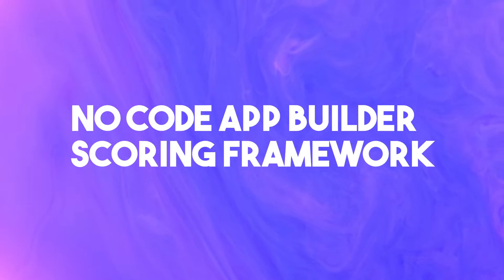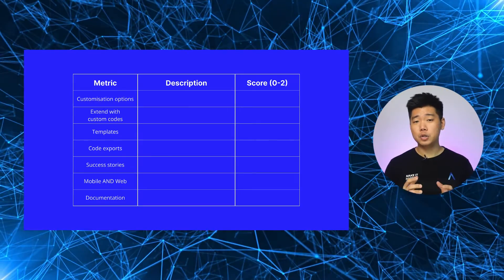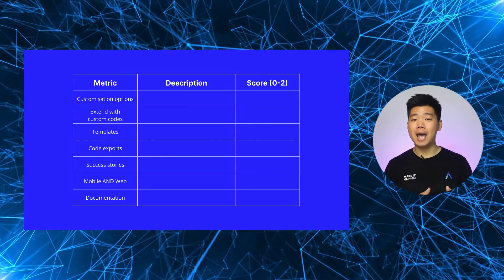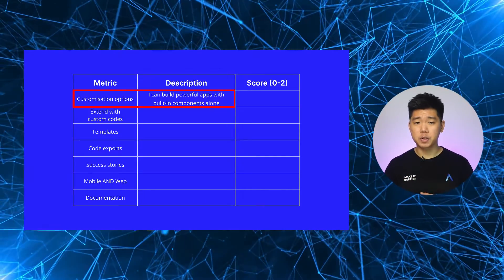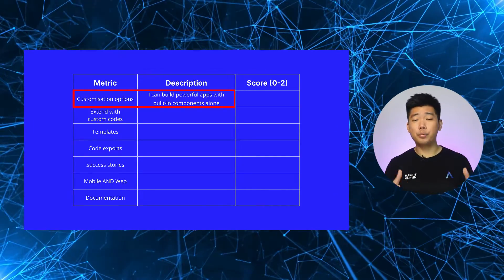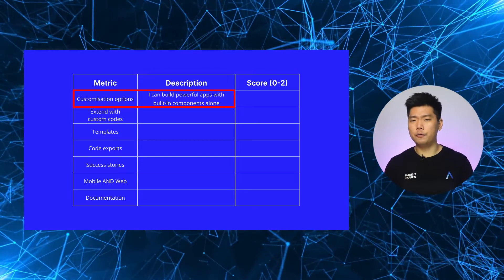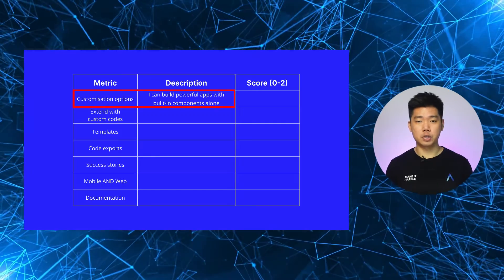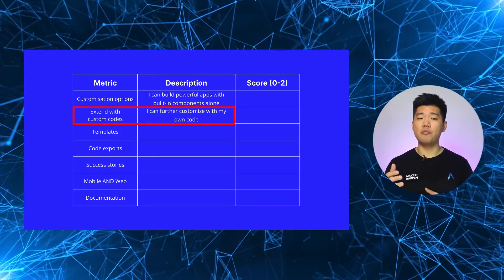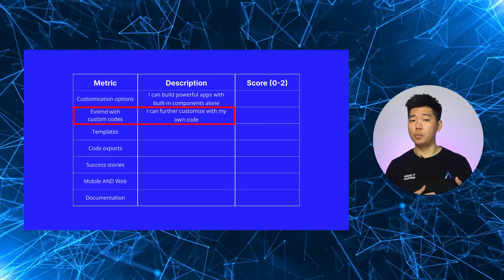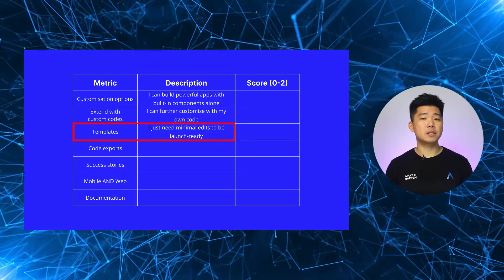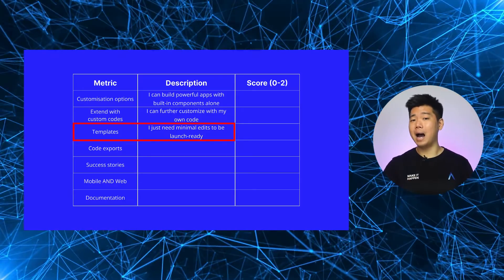Let's take a look at the no-code app builder scoring framework. I'm not a carpenter, but I think I've put together a pretty sweet table of metrics to measure no-code app builders. I've left the descriptions empty so I can explain what they mean to me and fill it in row by row. Customization options refers to how complex the pre-built logic is — can I drag and drop my way to a powerful, scalable app with only pre-built functions? Extend with custom code: can I build on top of my pre-built functions with my own custom-coded components, and if so, how extensively?